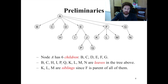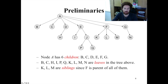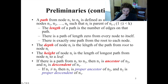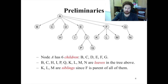The length of a path is the number of edges on that path. The path A-E-J-P has three edges, so its length is three. Depth of a node is the length of the path from the root to that node. The depth of node J is the length of the path A-E-J, which has two edges, so depth of J is two.